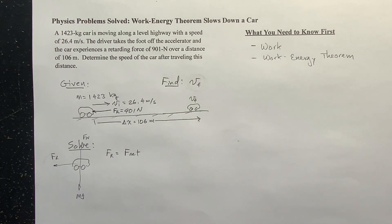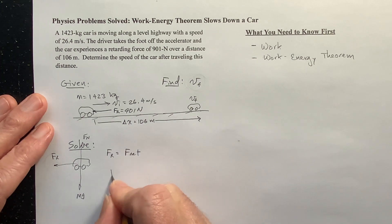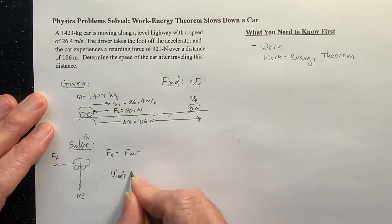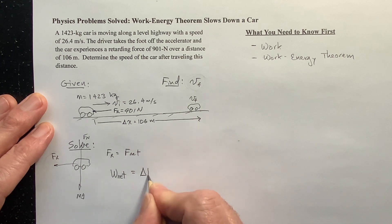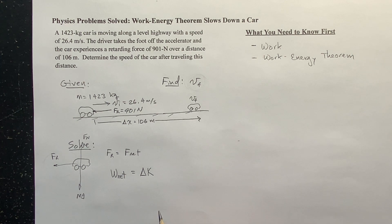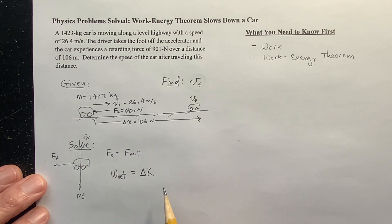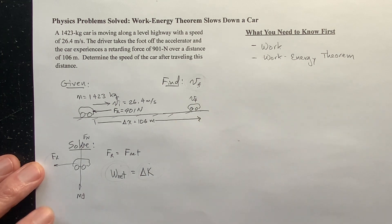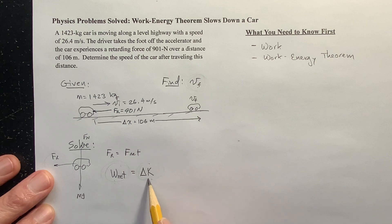So now I'm going to use the work-energy theorem — one of my favorite equations because it's so simple. It just says the work done by the net force on an object will be equal to the change in kinetic energy of the object. That is the work-energy theorem, sometimes called the work-energy principle. And so if we can figure out how much work was done, we can figure out the change in kinetic energy, and velocity is part of that.